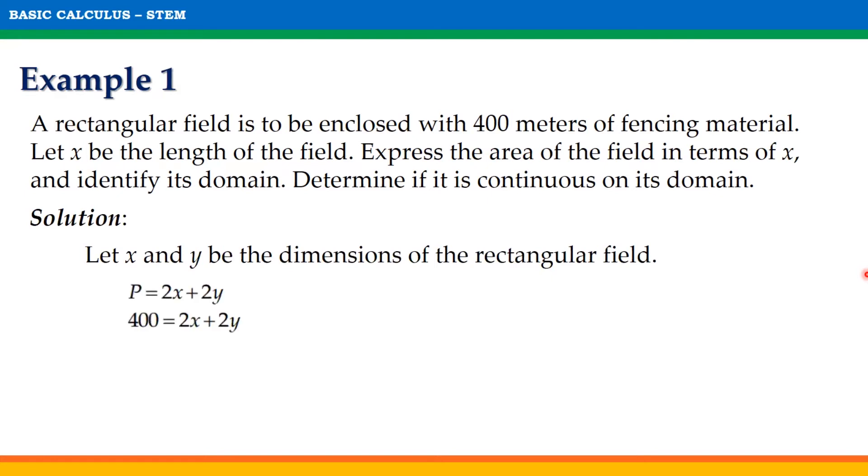Since the field will be enclosed by 400 meters of fencing materials, it follows that the perimeter is 400 meters. Applying x and y in the dimensions, we will have P equals 2x plus 2y. And since the perimeter is equal to 400, then the equation will become 400 equals 2x plus 2y. From this equation,